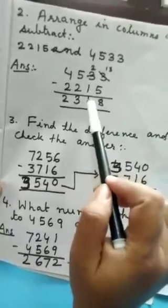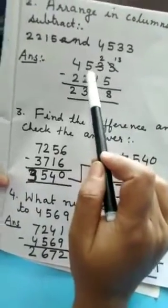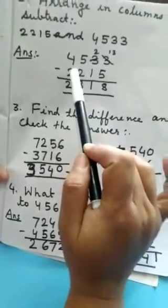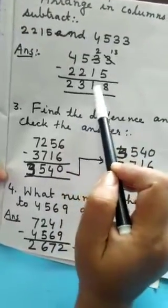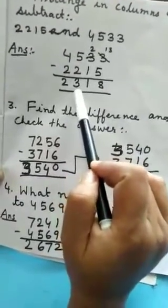2 minus 1, 1. 5 minus 2, 3. 4 minus 2, 2. So, your answer is 2,318.